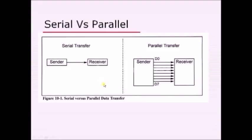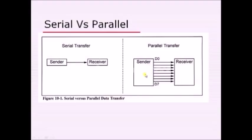Looking at advantages and drawbacks: serial communication's advantage is that it is simpler and the cost for implementing this kind of communication is very less. The drawback is that the speed of transmission is very less. In case of parallel communication, the advantage is that the speed of transmission is high, but the drawbacks are that the system is very complex, cost is very high, and there is a chance of noise degrading the message.